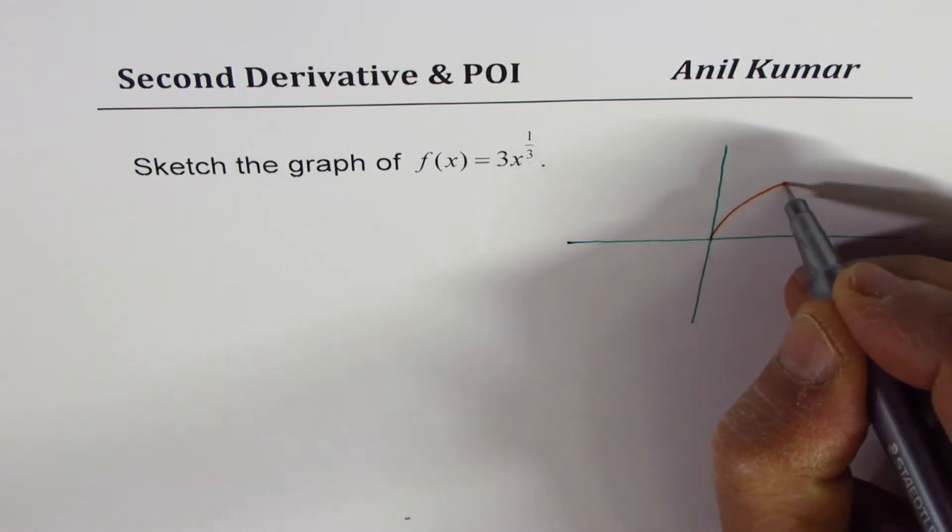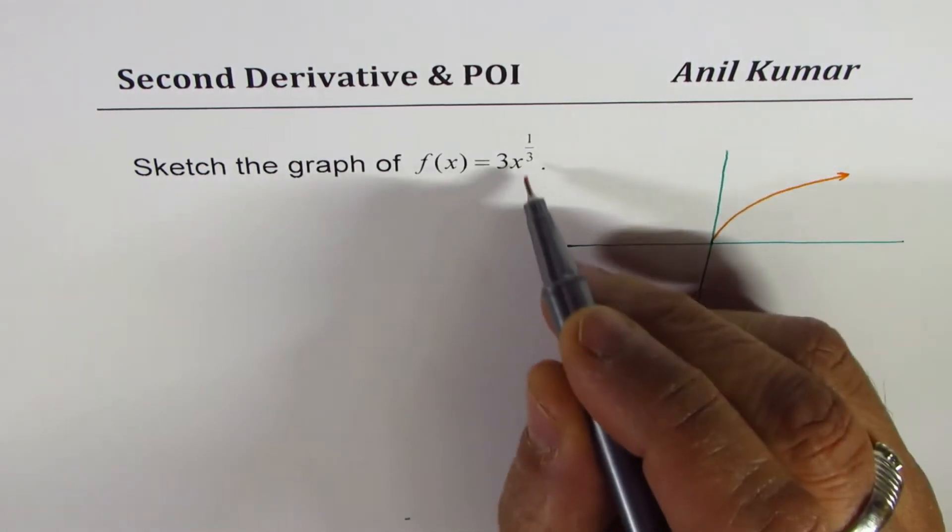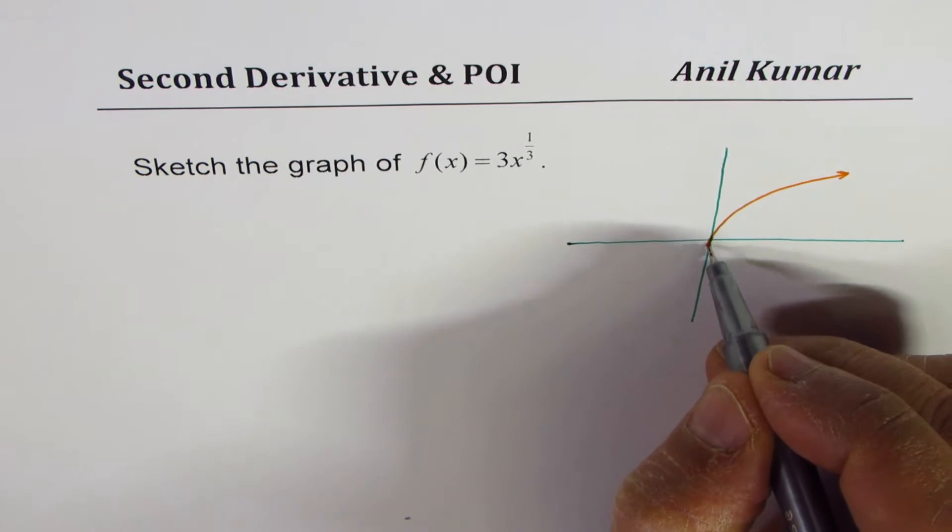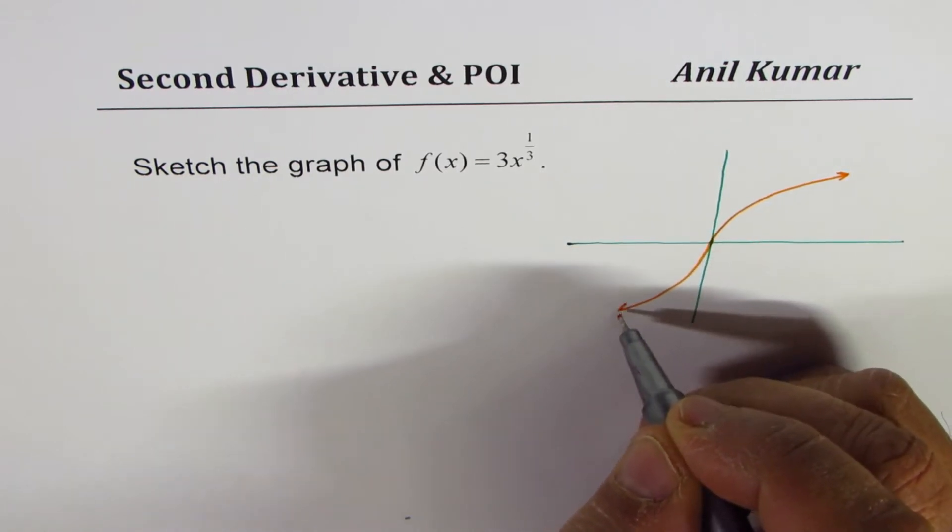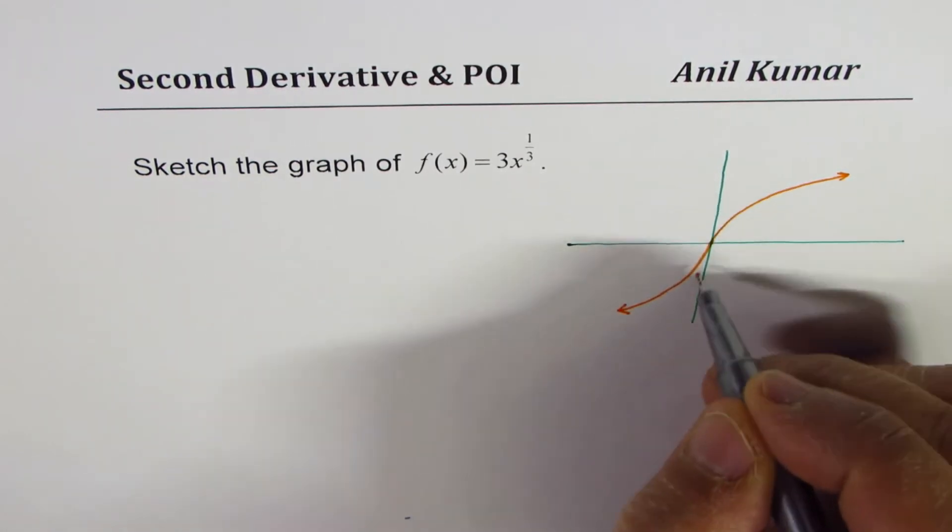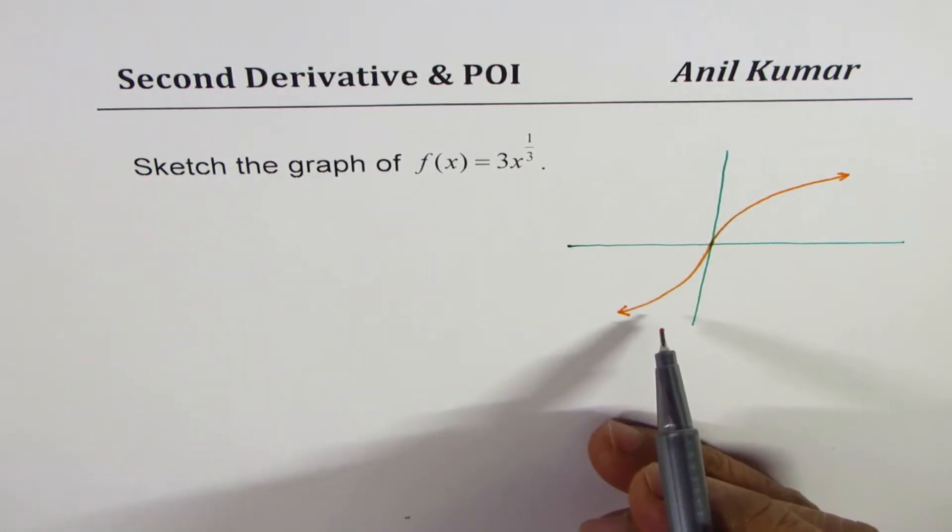So it's like more or less like a square root function on this side. But cube root, the domain is all real numbers, so it extends to this side also. Cube root of negative numbers is negative, and that is how the graph of this function looks like.